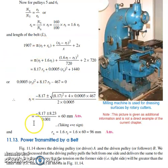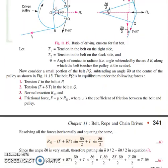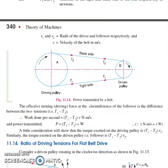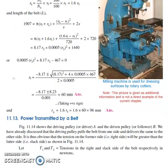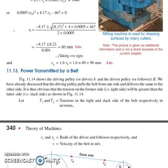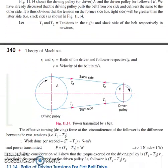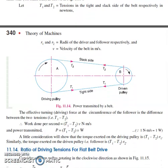The variation between open belt and crossed belt results will be very small. Next, we look at power transmission by belt. There are three key quantities: velocity (v = π·d·n / 60), where d is the diameter of the pulley and n is the speed in rpm.